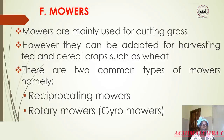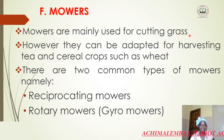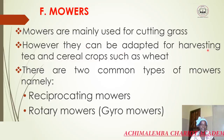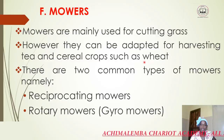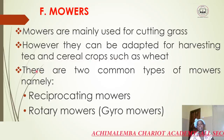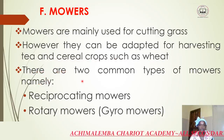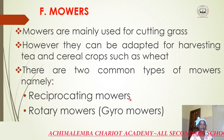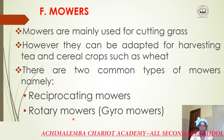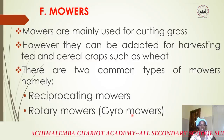Another tractor-drawn implement is a mower. Mowers are mainly used for cutting grass; however, they can be adapted for harvesting tea and cereal crops such as wheat. They can also be used in weeding, most especially in an orchard. The two common types of mowers are reciprocating mowers and rotary mowers.